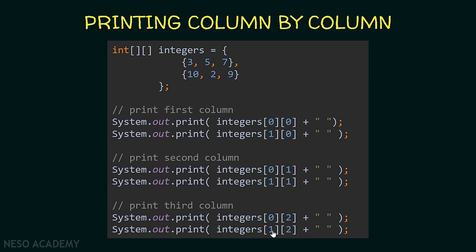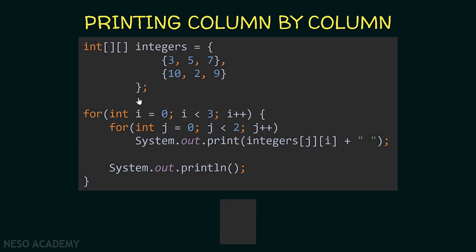So this time the outer loop iterates over the columns and the inner loop iterates over all elements in that column. In the outer loop I'm using variable i starting from zero, i less than three, i++ — iterating over the three columns. Inside the loop the inner loop starts from zero, j less than two, j++ — iterating over the number of rows. I'm printing integers[j][i] because j is the index for the rows and i is the index for the columns. After we finish printing a column I print a new line.